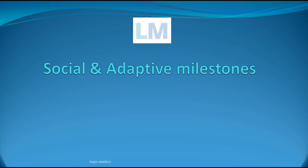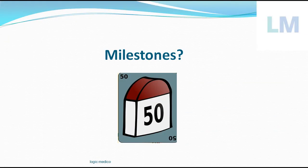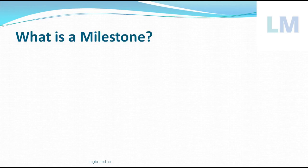Hello everyone, welcome to my YouTube channel Logic Medical. Today's interesting topic is social and adaptive milestones. When you're going on a highway or railway, on the side there is a stone placed mentioning the distance of miles between two cities — from the city you are traveling towards the destination city. That is called a milestone in general.